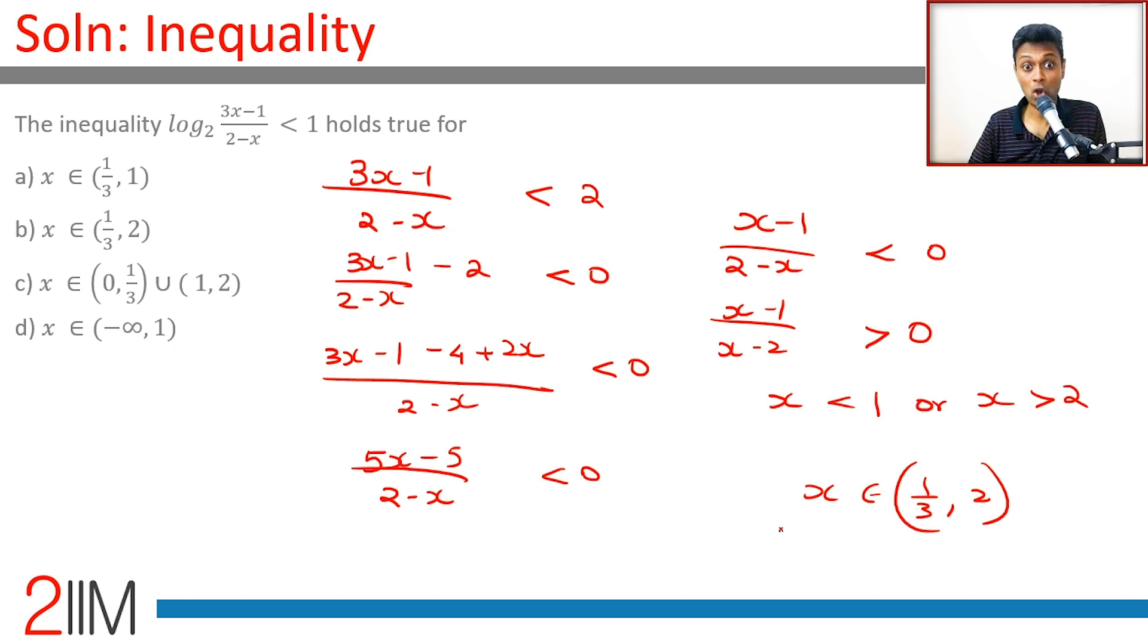Both of these conditions should be satisfied: the log should be defined and the inequality should hold good. That means x simply cannot be greater than 2, then the log won't be defined. So x should belong to the range 1/3 to 2 and should be less than 1, or x should be in the range 1/3 to 1.